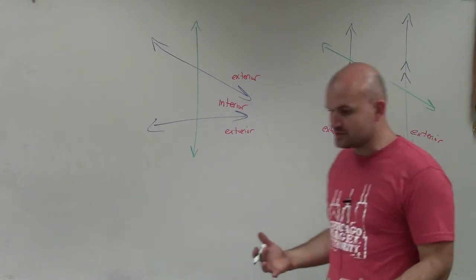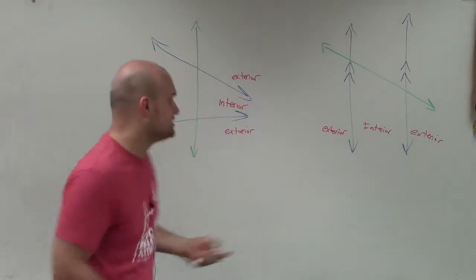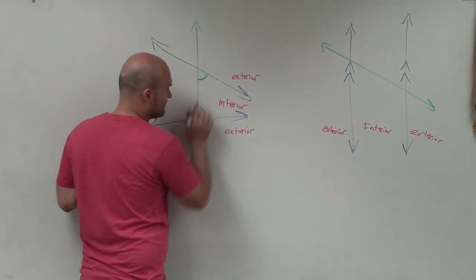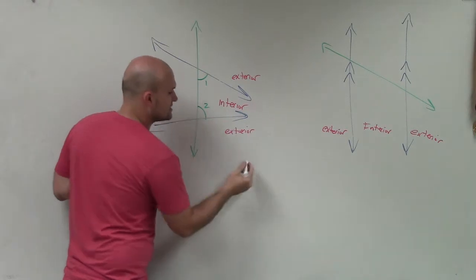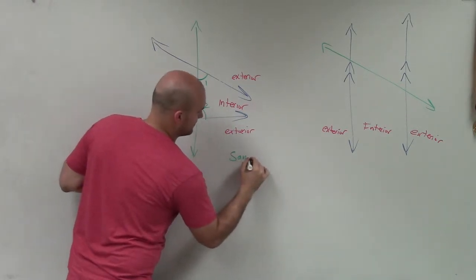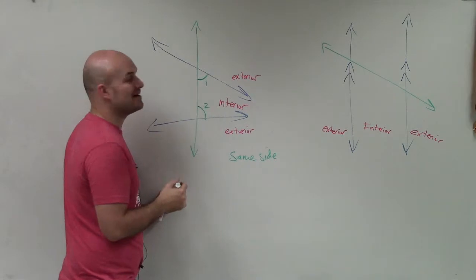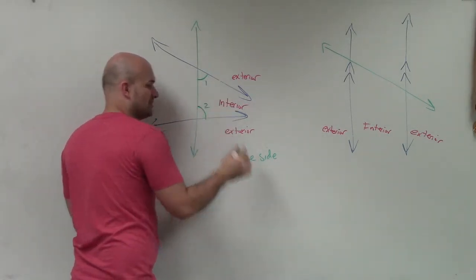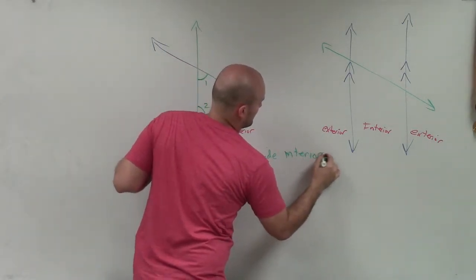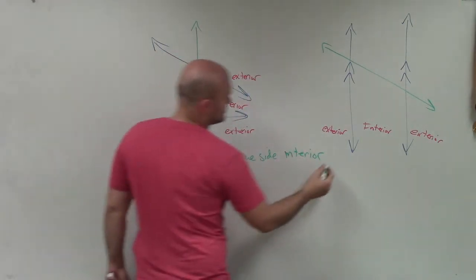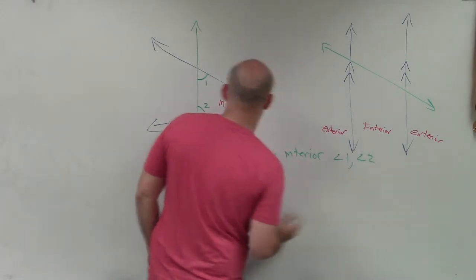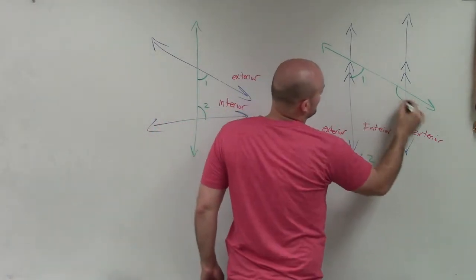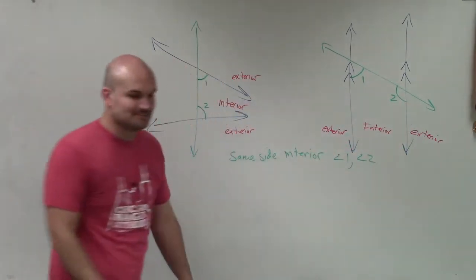The first way we can relate angles is by looking at angles that are on the interior and on the same side of the transversal. We call those same-side interior angles — same side of the transversal, both interior. An example would be angle one and angle two.